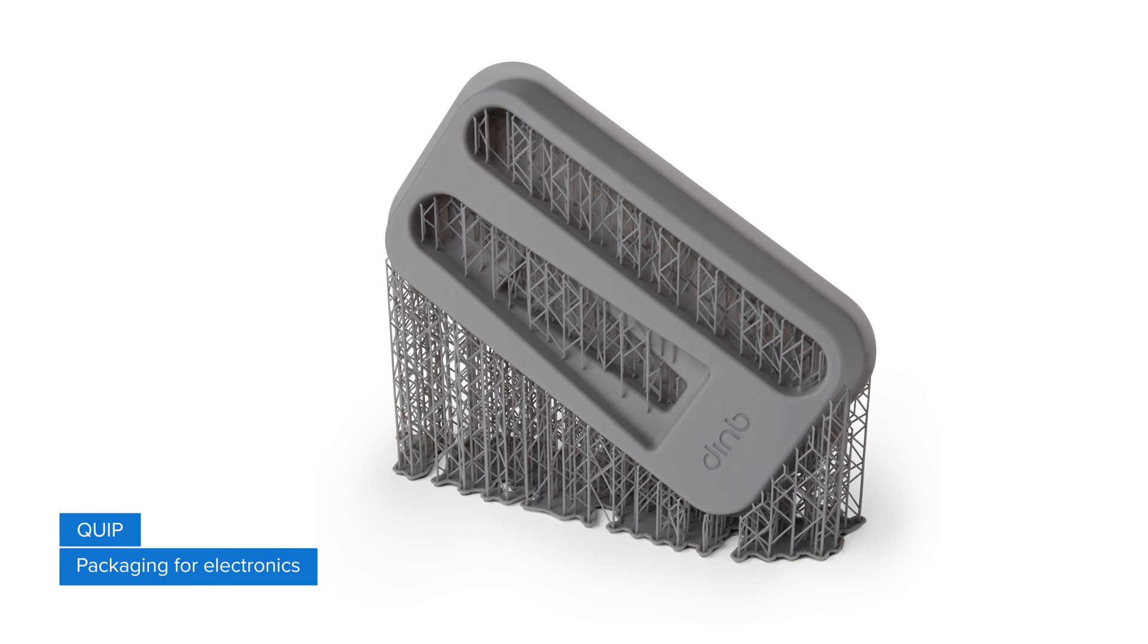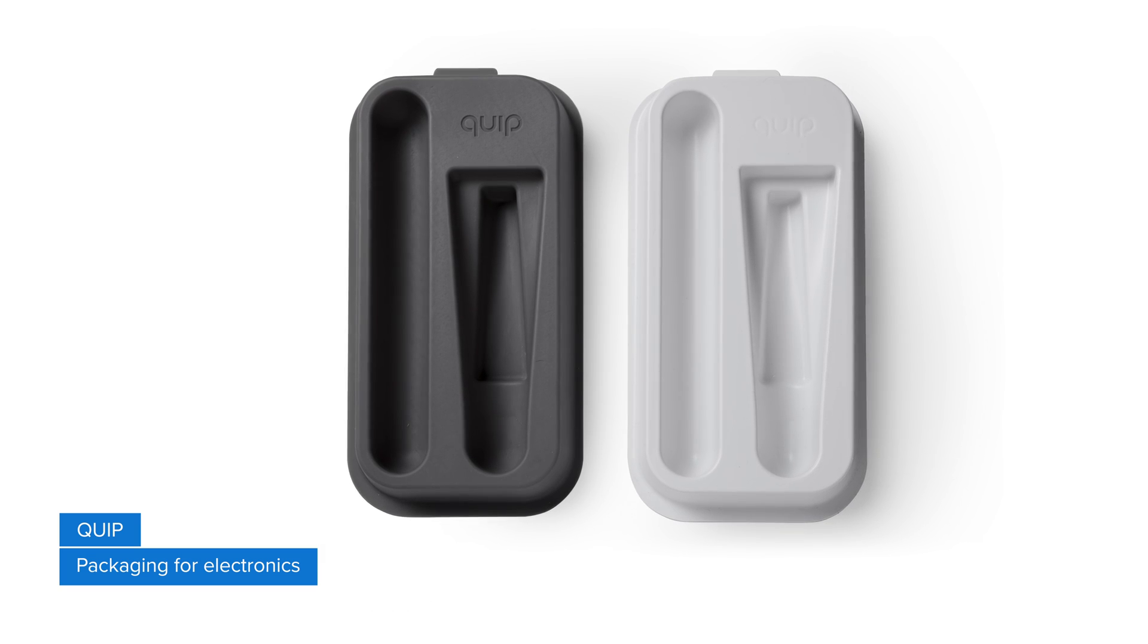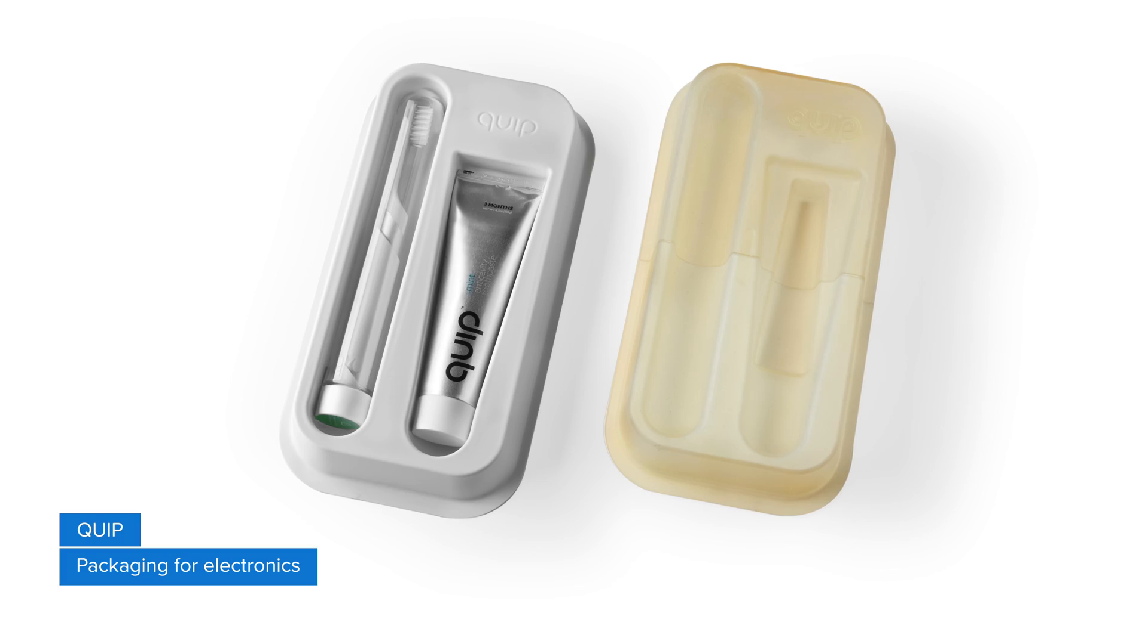The product development team at Quip uses 3D printed molds and vacuum forming to prototype packaging for electric toothbrushes and accessories.